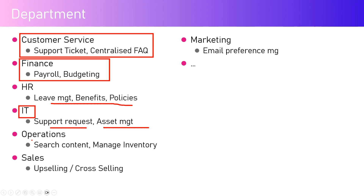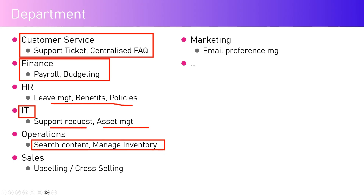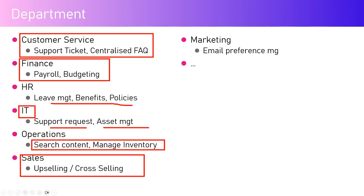For Operations, users can search for content and manage inventory — checking stock reorder levels, verifying whether stock exists, has been purchased, and is in the right condition to be shipped or delivered. From a Sales perspective, the agent can be used for upselling or cross-selling products. From a Marketing perspective, you can configure email preference management so that if a user doesn't want to receive marketing information, those settings can be tracked and set by the agent.